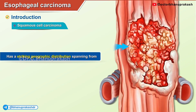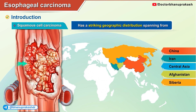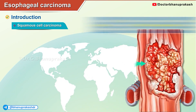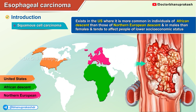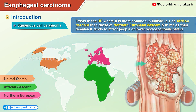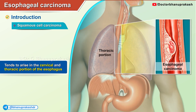Squamous cell carcinoma has a striking geographic distribution spanning from China to parts of Iran, Central Asia, Afghanistan, Siberia, and Mongolia. It also exists in the United States, where it is more common in individuals of African descent and North European descent, more common in males than females, and tends to affect people of lower socioeconomic status. It tends to arise in the cervical and thoracic portion of the esophagus.